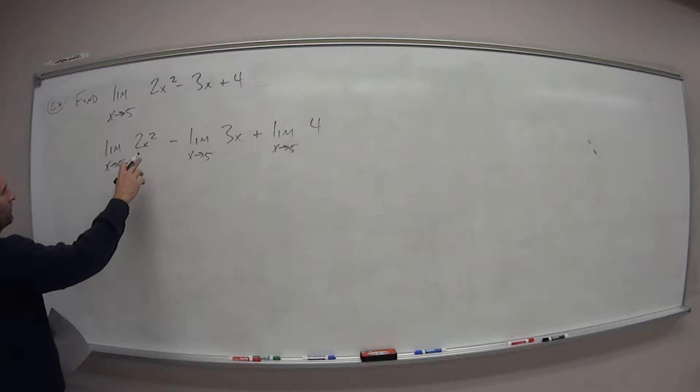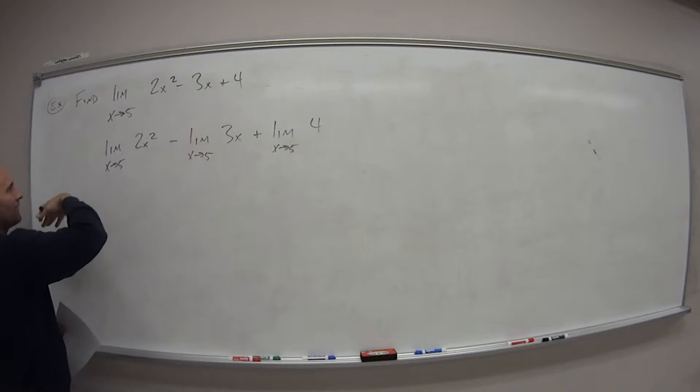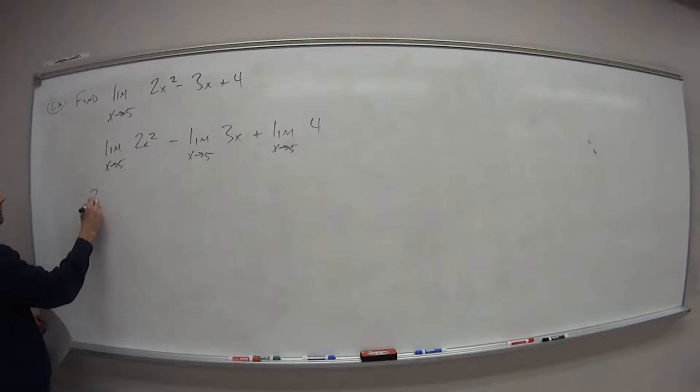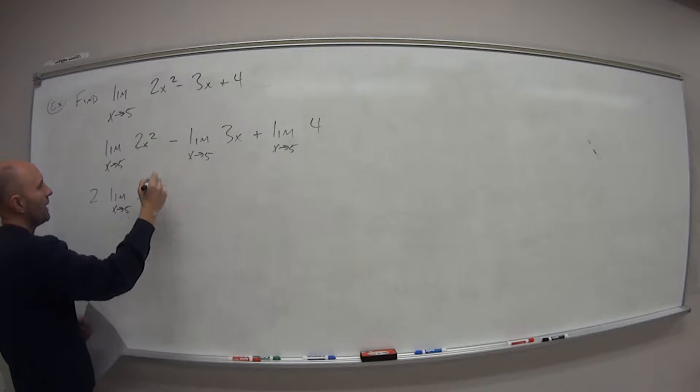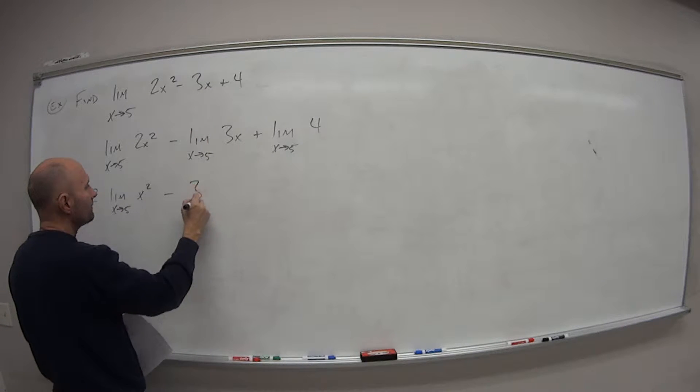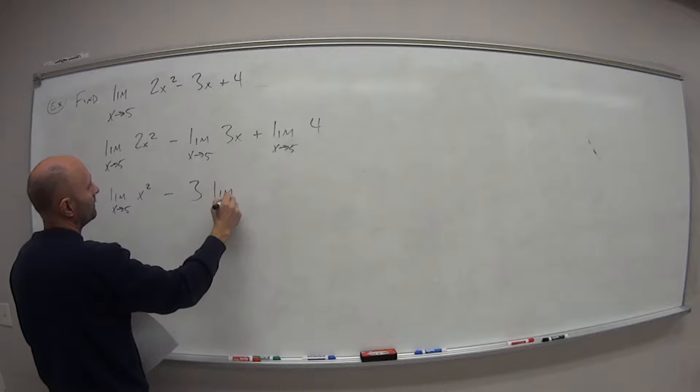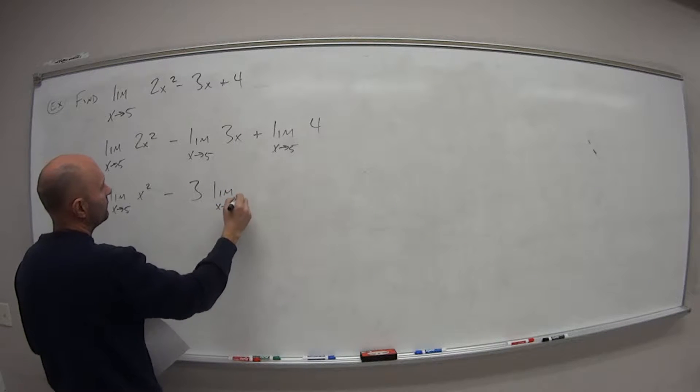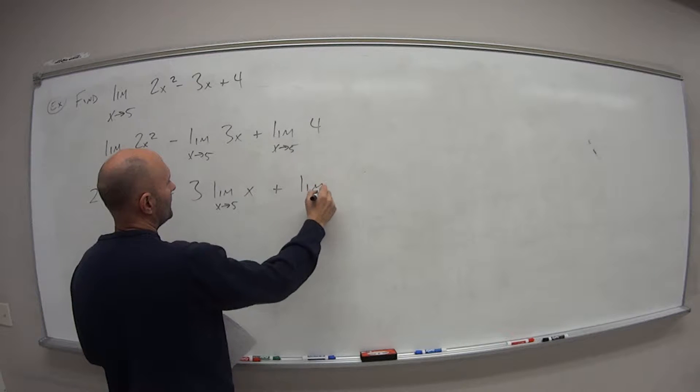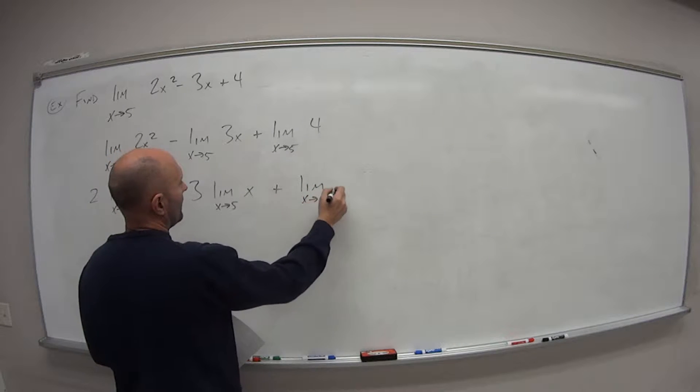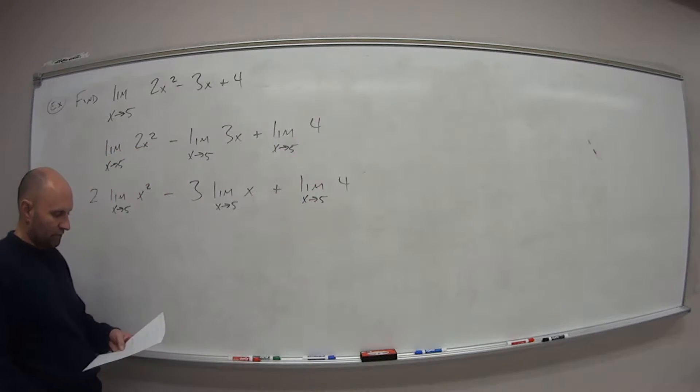We can rewrite this one. With this 2 and 3, that's our scalar. We can move that in front, right? So this is the same as 2 times the limit as x approaches five of x squared minus 3 times the limit as x approaches five of x, and then plus the limit as x approaches five of our constant value 4.